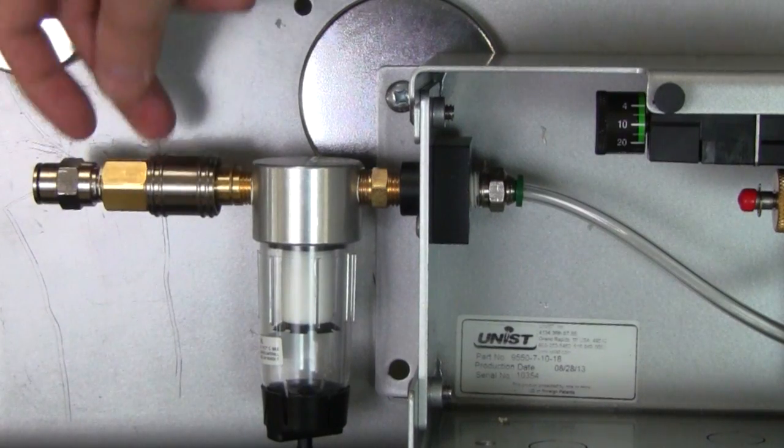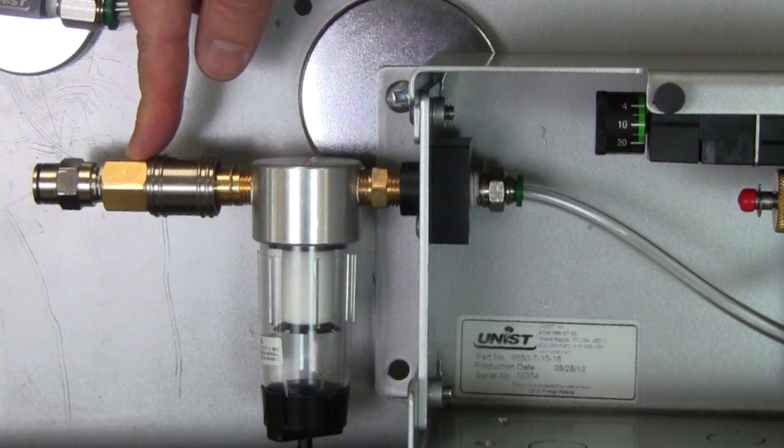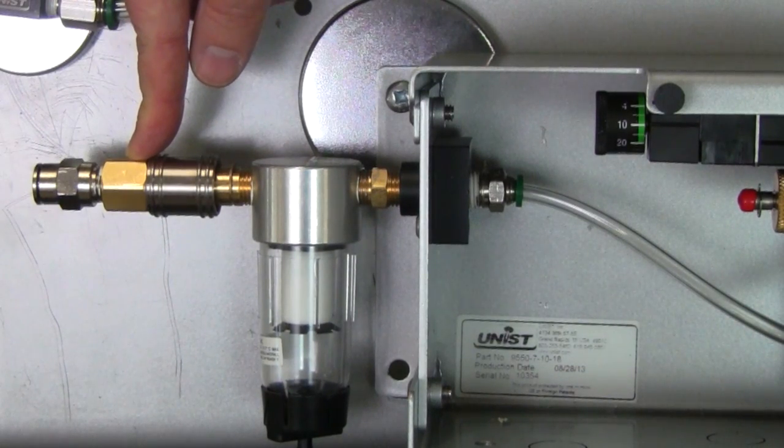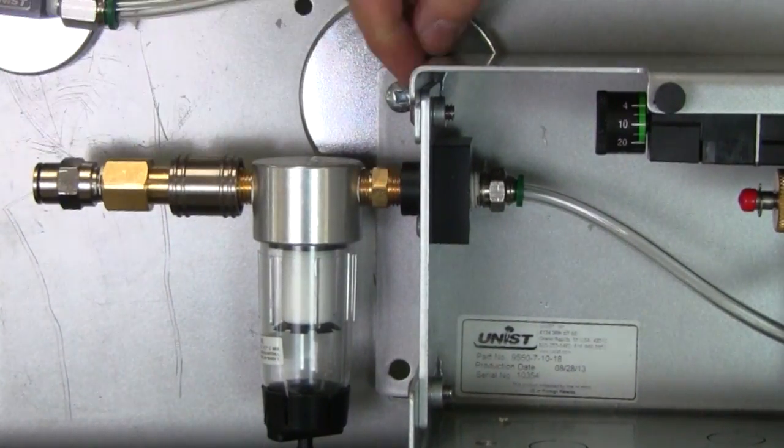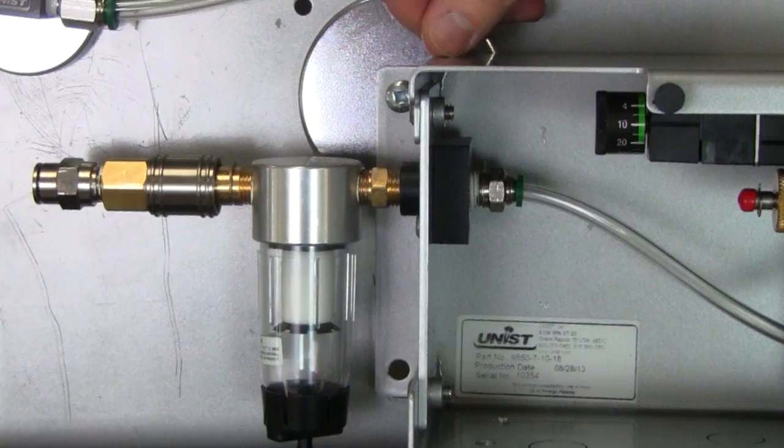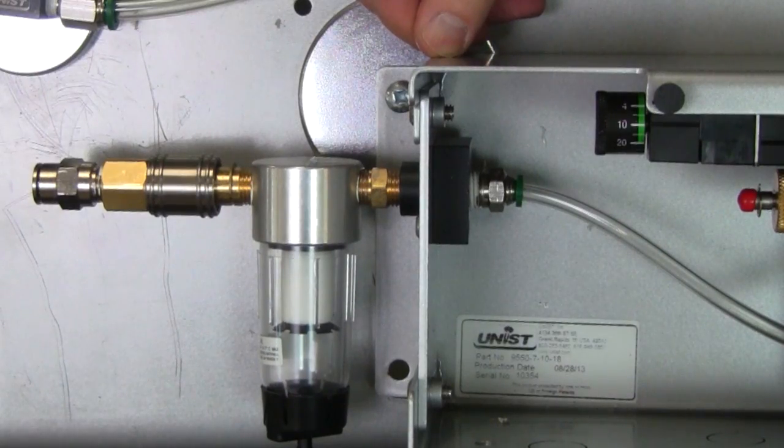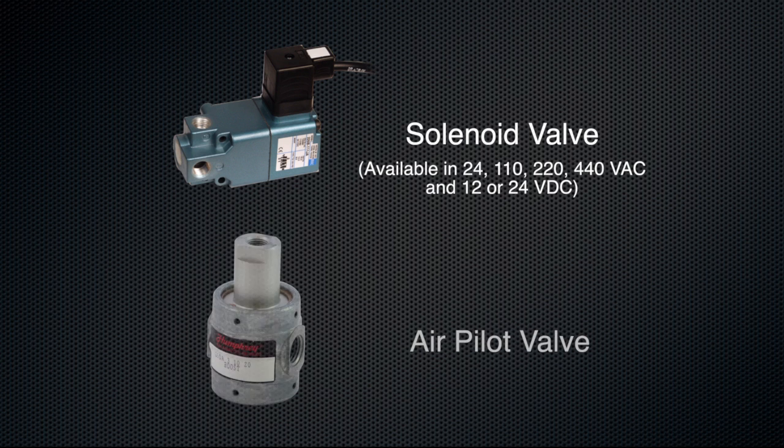For today's purposes, we're illustrating the manual valve option. This manual valve turns the air on and off to supply the power to the system. Moving the slide valve to the right turns the air on. Moving it back to the left turns the air off. Now your system may have a solenoid valve inside the enclosure or an air pilot valve, which is what we're going to use to interrupt the air signal to the cool lubricator.